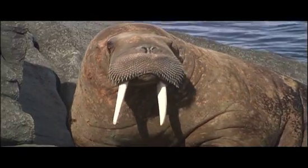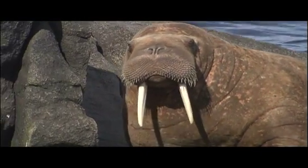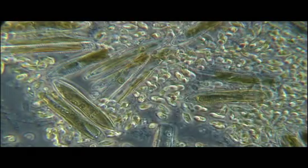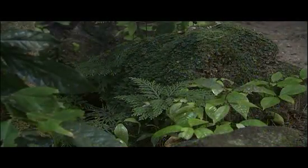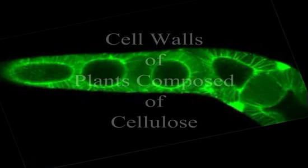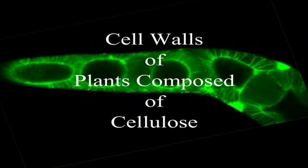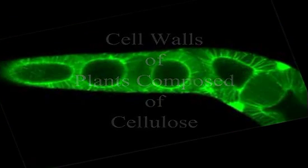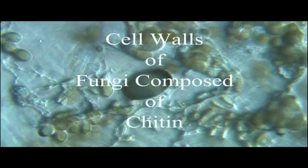While in animals the cell membrane is exposed directly to the external environment, in the cells of certain protists, most bacteria and fungi, and all plants, the cellular membrane is covered by a stiff nonliving cell wall. In plant cells, the cell walls are composed of cellulose and other polysaccharides, while in fungal cells, the walls are made up of a modified polysaccharide called chitin.